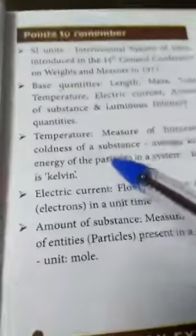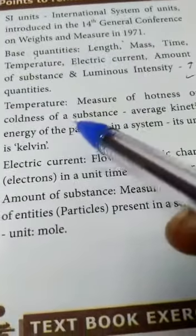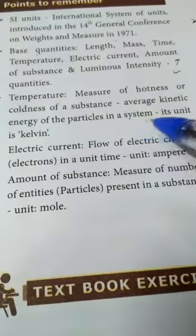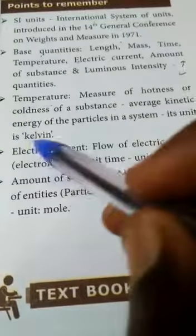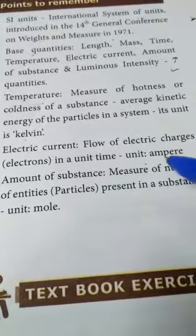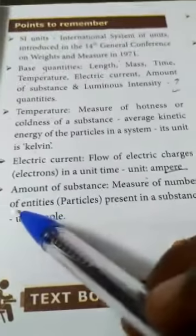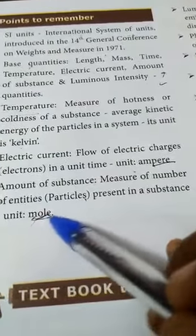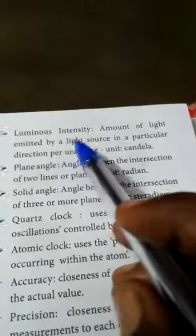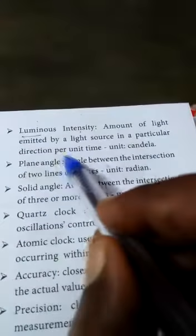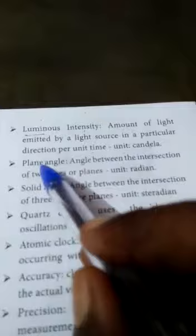Temperature: measure of hotness or coldness of a substance, average kinetic energy of the particles in the system. The unit is Kelvin. Electric current: flow of electric charges into unit time, unit is ampere. Amount of substance: measure the number of entities or particles present in the substance, unit is mole. Luminous intensity: amount of light emitted by a light source in a particular direction per unit time, unit is candela.